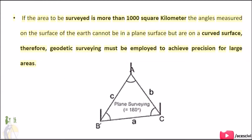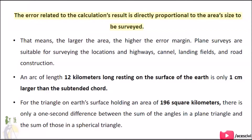If the area to be surveyed is more than 1,000 square kilometers, the angles measured on the surface of the Earth cannot be in a plane surface but are on a curved surface. Therefore, geodetic surveying must be employed to achieve precision for large areas. The error related to the calculation result is directly proportional to the area's size to be surveyed — the larger the area, the higher the error margin.